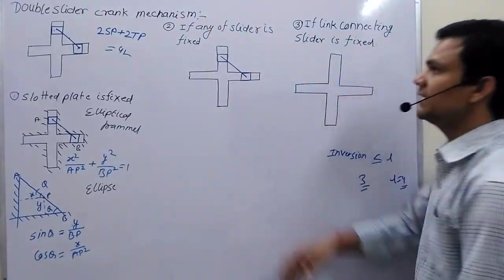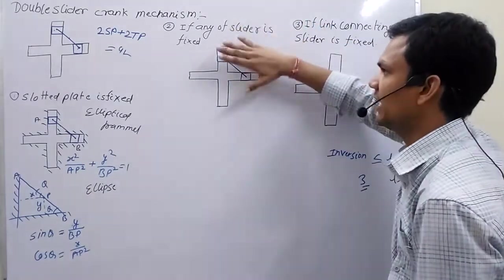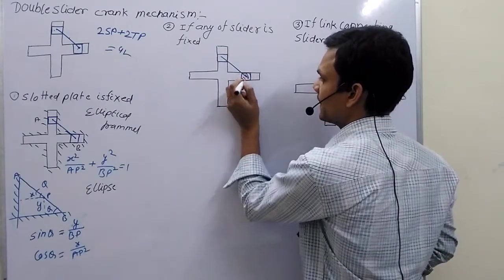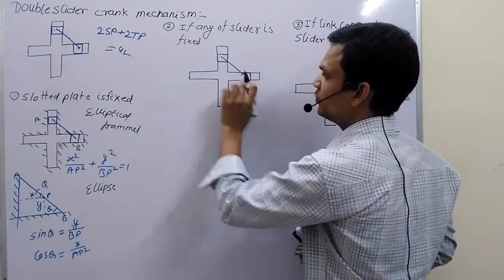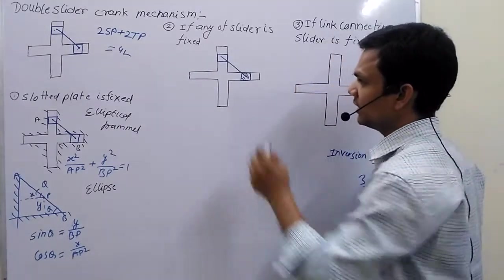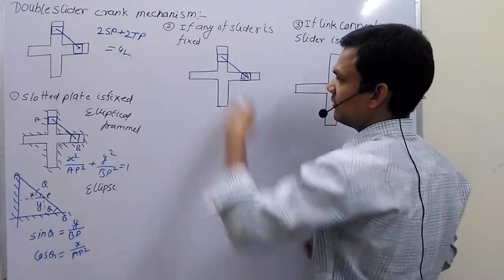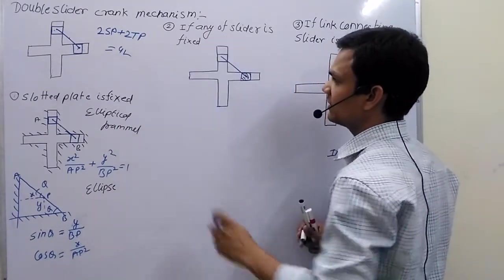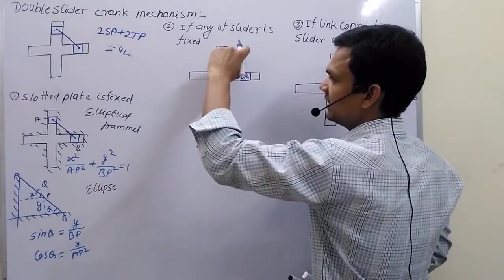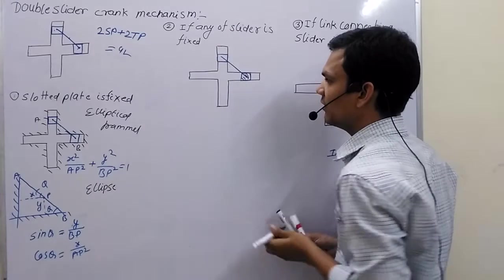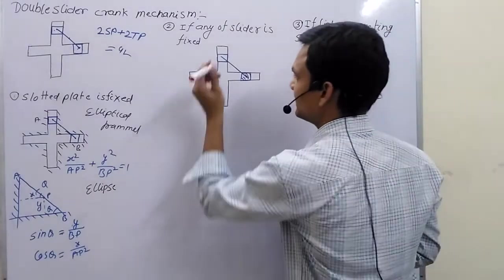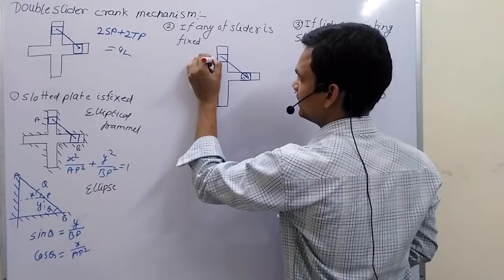In the second case, if we fix any one of the sliders — suppose I fix this slider — then this slider cannot move, but the plate can move and the other slider can move. Now, if this slider rotates, this is a turning pair, and the plate goes in the forward direction — something like this.